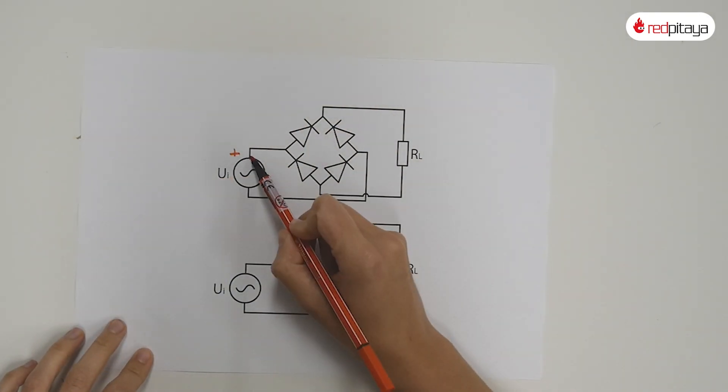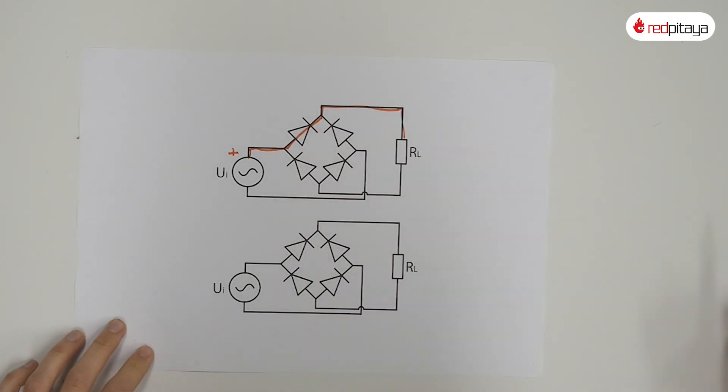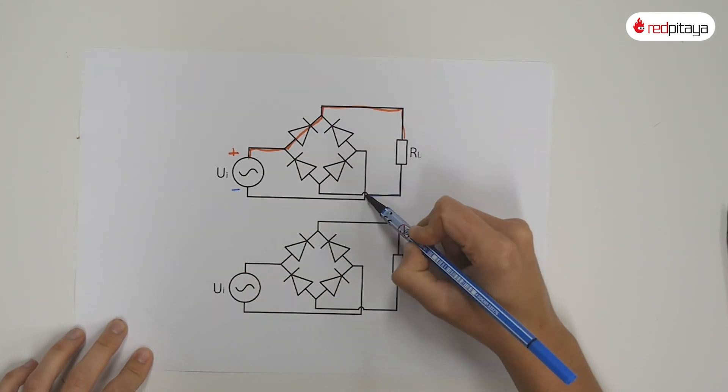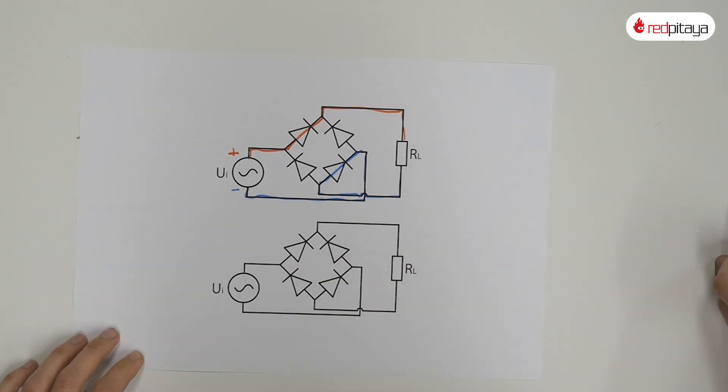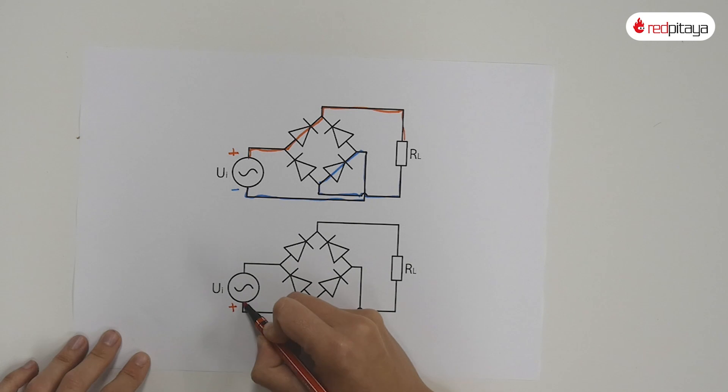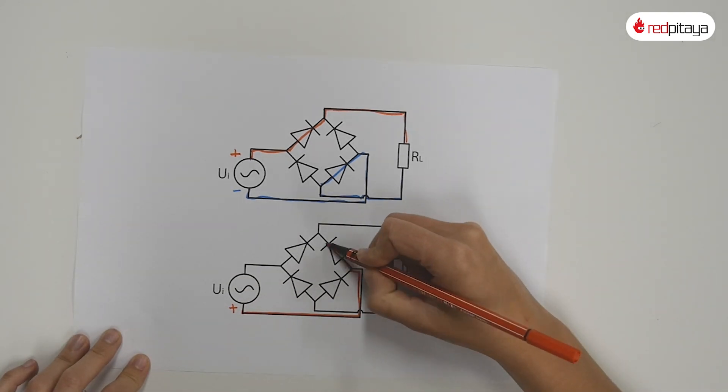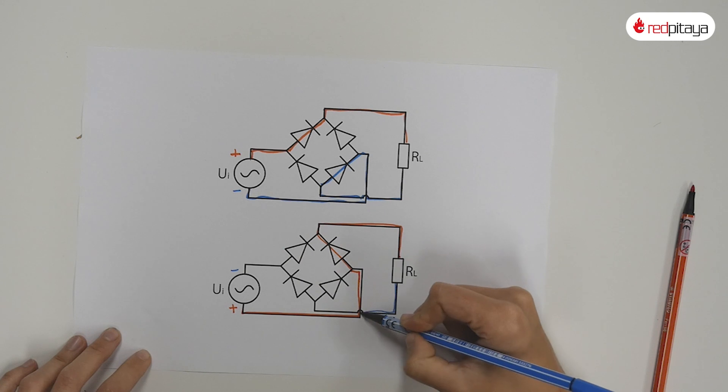It looks like this. When input voltage is positive, current flows like so. Remember, diodes only conduct in forward direction. Negative input voltage will result in such current flow. Does it work? Of course it does.